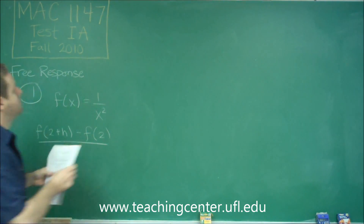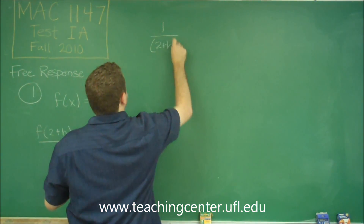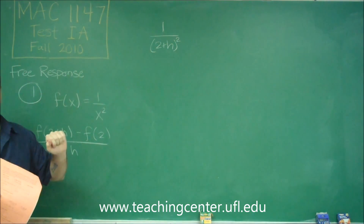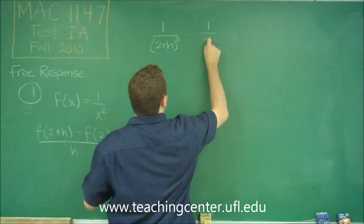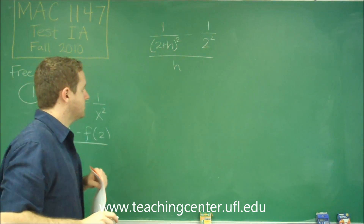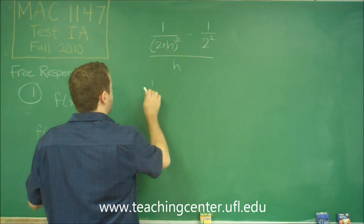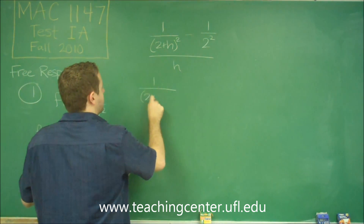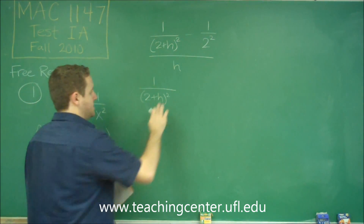f of 2 plus h will be 1 over (2 plus h) squared — all we did was take the 2 plus h and put it in for x. Similarly, we'll just put in the 2 for f of 2, and we have that all over h. Let's not expand this just yet, because we're going to need to find a common denominator, and leaving things factored is always easier.